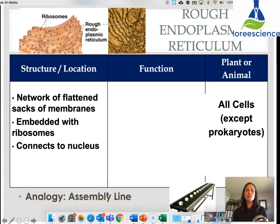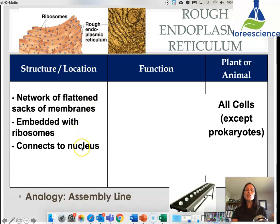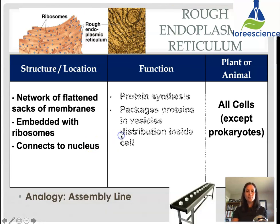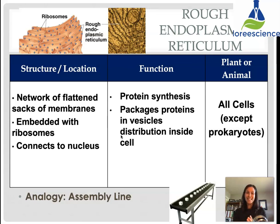The rough endoplasmic reticulum, or RER, is a network of flattened sacks of membranes — continuous membranes with many folds. It is embedded with ribosomes, which is why it is known as 'rough': under a microscope it looks like it has little bumps, and those bumps are ribosomes. It is directly connected to the nucleus, so when identifying it in a cell, look for the nucleus — the RER is attached to it. Its function is to create proteins, or protein synthesis. It also packages those proteins in vesicles for distribution within the cell. All cells except prokaryotes have an RER. In terms of analogy, this would be like the assembly line of a company.